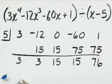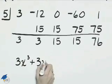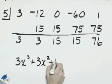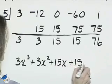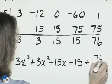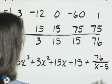And now let's write the polynomial for the quotient. This will be 3x to the third power plus 3x squared plus 15x plus 15 plus the remainder of 76 divided by the quantity x minus 5.